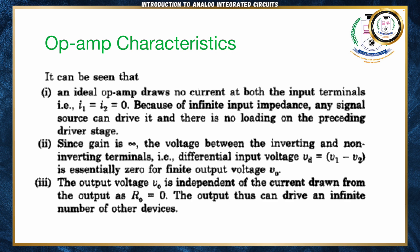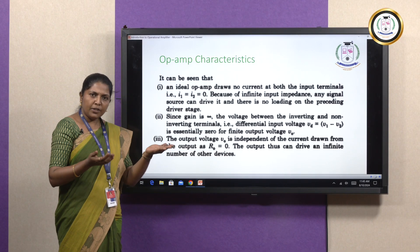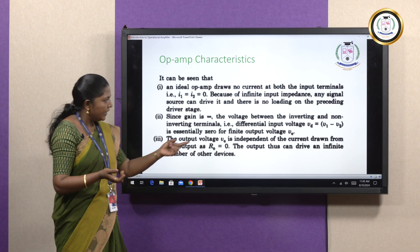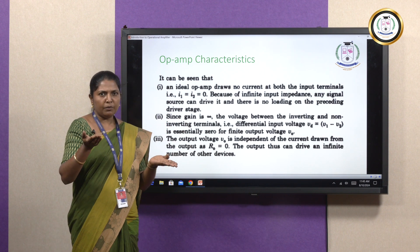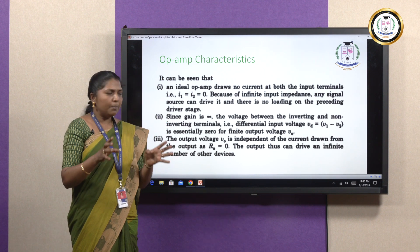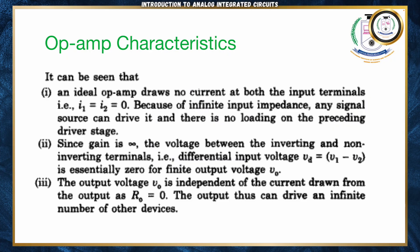In addition, there are three other characteristics. First, an ideal op-amp draws no input current at both input terminals — it does not take input current from the input source. Second, the difference between the inverting and non-inverting terminals equals zero, that is Vd = V1 − V2 = 0, where V1 and V2 are the inputs to the inverting and non-inverting terminals. Third, the output voltage is independent of the current drawn from the output because R0 = 0, so the output can drive an infinite number of other devices.